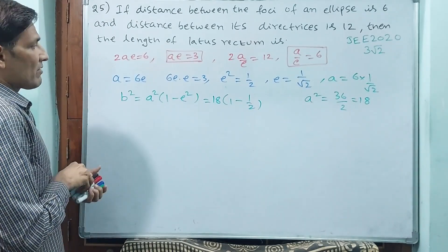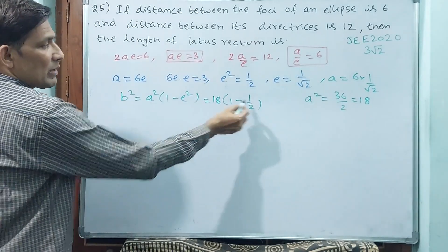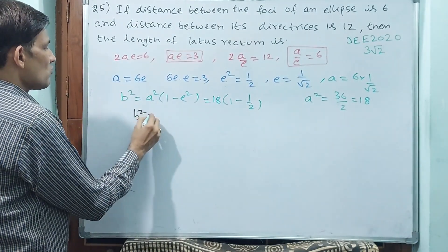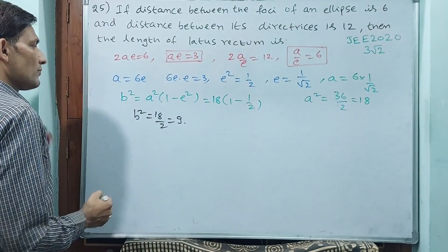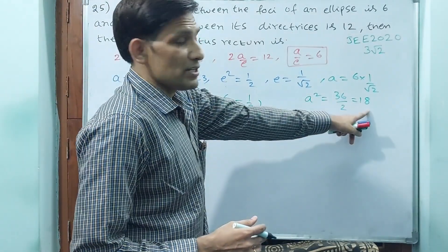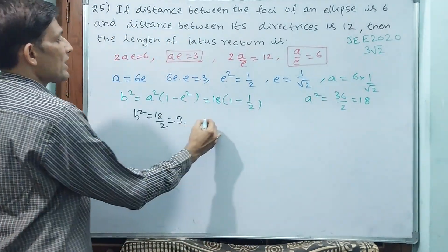And what will happen here? 1 minus 1/2 is 1/2. That means B² is equal to 18/2, that is equal to 9. A² is 18, B² is 9.